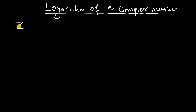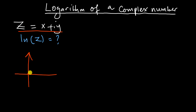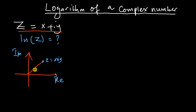Suppose we have a complex number z equals x plus iy, and our problem is how to find the natural log of z. To begin with, let me sketch this complex number on an Argand diagram. I have the real axis and the imaginary axis, and this is my complex number z equals x plus iy.